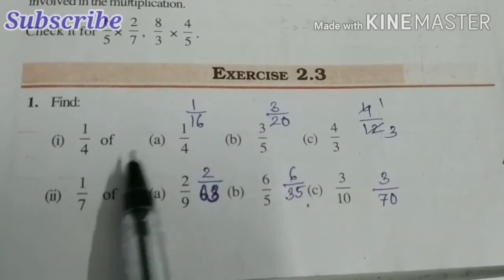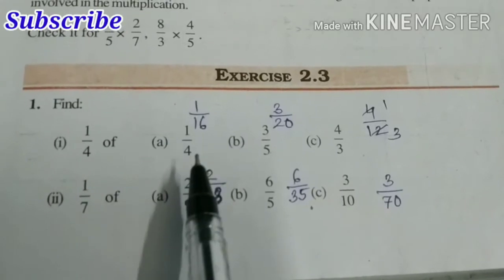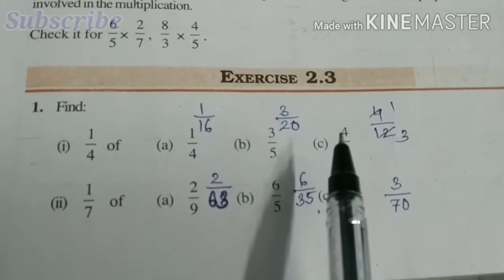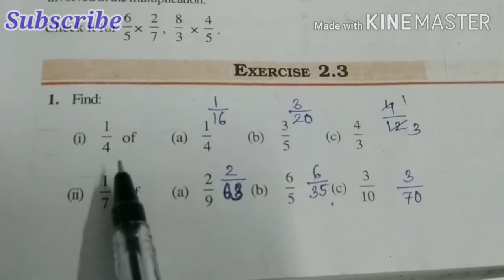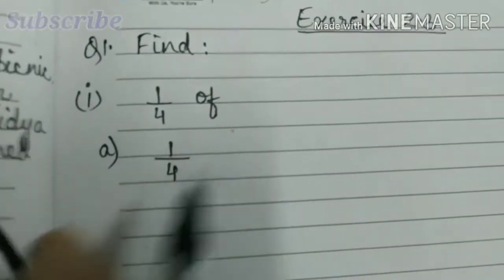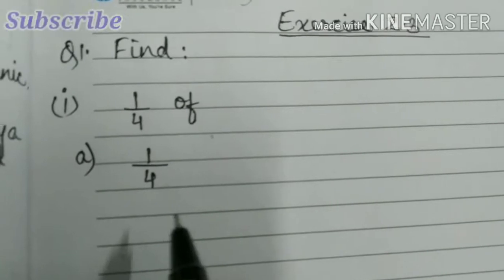Find: one-fourth of (a) one-fourth, (b) three-fifths, (c) four-thirds. So one-fourth of—that is, we have to find the product. Here I have written the question: one-fourth of one-fourth.